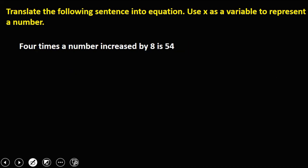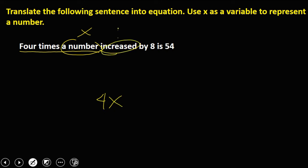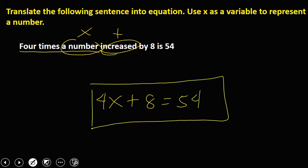'4 times a number increased by 8 is 54.' So 4 times the number is 4x, increased by means plus, so plus 8, and is means equals 54. The equation is: 4x + 8 = 54.